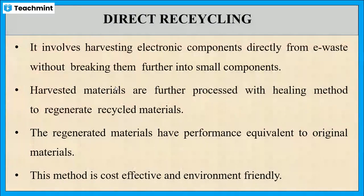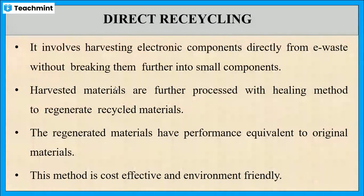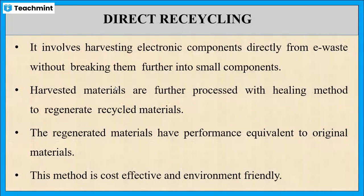For better understanding, here is an example. The battery is discharged first in order to avoid short-circuiting and self-ignition. After that, the battery is dismantled to separate the cathode, anode, electrolyte, and the separator. Finally, these components are reassembled for reuse. This is one of the examples of the direct recycling method.